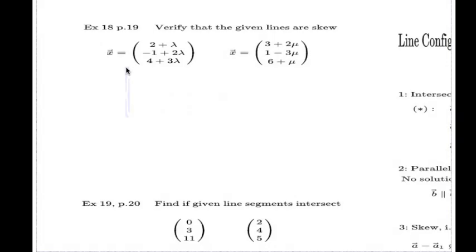The example says we have to be given two lines like this and like this. We have to test that these two lines are skew.